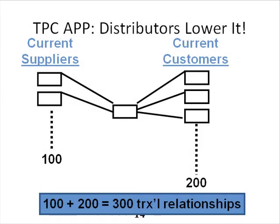In this slide, I'm going to continue with variations on a theme, the theme being total procurement cost. In this particular building block, I want to explain why total procurement cost is a fundamental, foundational reason for why distributors exist in channels of distribution to begin with.